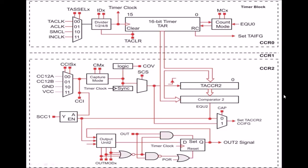This is the complete block of the capture-compare model and the timer model. The first is the timer clock. Four options are available: Timer A clock, asynchronous clock, SMCLK, and INCLK. Any of these four options can be selected by the user through the TASSELX bits. After selecting a proper clock, the clock can be divided by 2, 4, or 8, or we can use the same clock for this timer block. To select the division of the timer, the IDX bits are used.